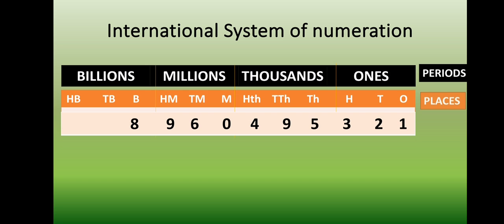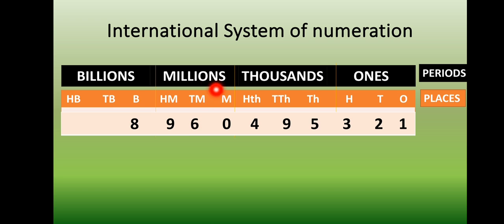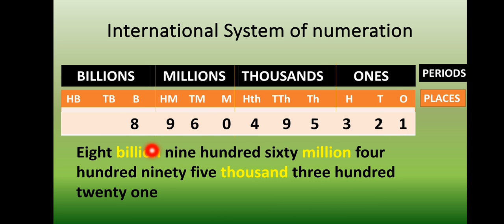The places are: ones, tens, hundreds, thousands, ten thousands, hundred thousands, million, ten million, hundred million, billion, ten billion, hundred billion. You can easily see that 8 is in the Billions period, 960 is in the Millions period, 495 is in the Thousands period, and 321 is in the Ones period. So I will read this number as 8,960,495,321.